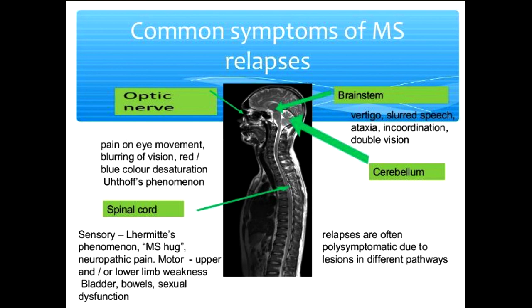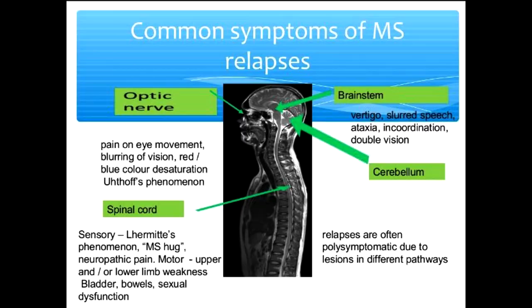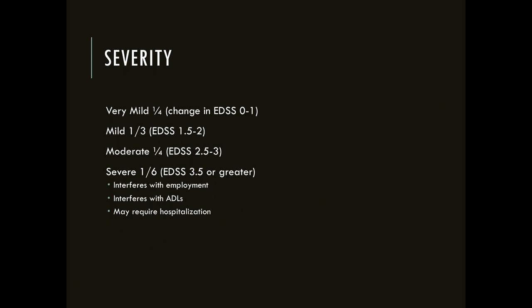Depending on where inflammation occurs, we get different relapse symptoms. In the optic nerve: visual loss ranging from subtle color changes to complete visual loss, blurring, or painful eye movement. In the brainstem: dizziness, speech disturbance, double vision, or eye movement abnormalities. In the spinal cord: disruption of motor function, bowel and bladder function, sexual function, and sensation. Not all relapses are equal — they range from very mild to severe, with severe relapses interfering with employment and activities of daily living.